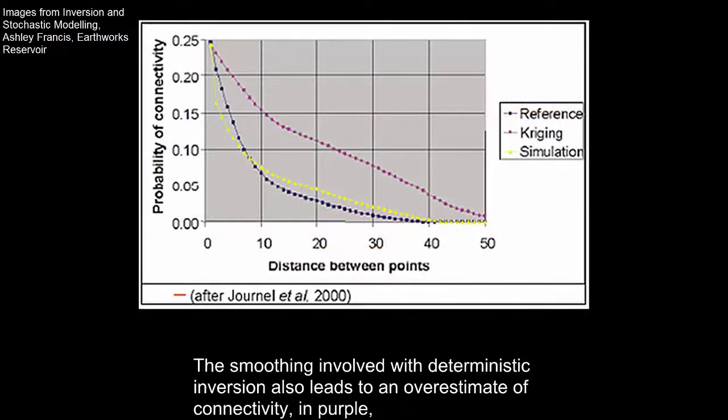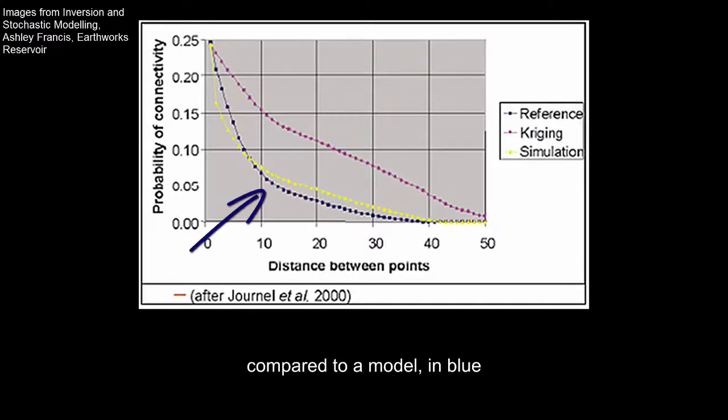The smoothing involved with deterministic inversion also leads to an overestimate of connectivity, in purple, compared to a model, in blue.